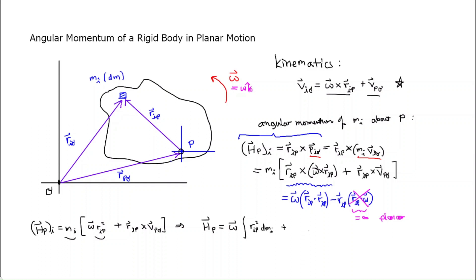Then plus the integral of r_ip dm_i — which is still a vector — crossed into v_po. Now there are some common themes here. First, the integral of r squared dm, where r is measured from point P: this is the moment of inertia of the rigid body about point P. Also, this integration of r dm is the total mass times the position of the centroid measured from point P.